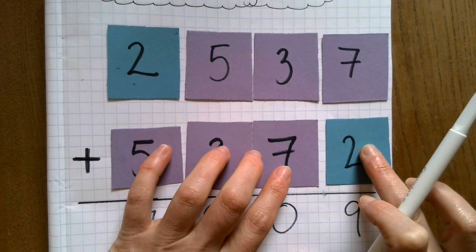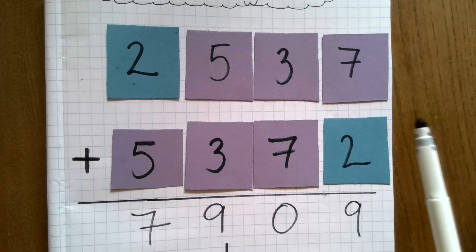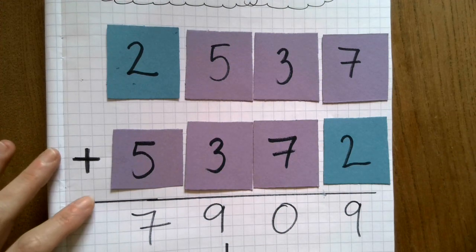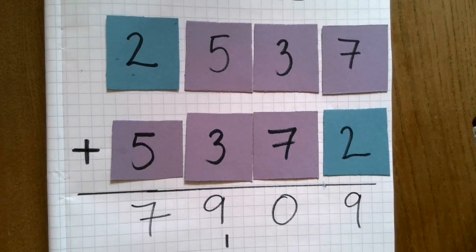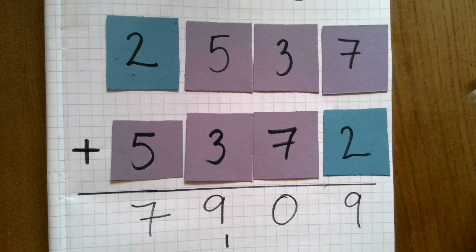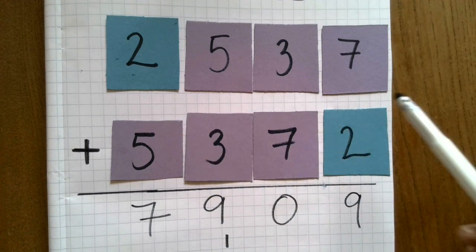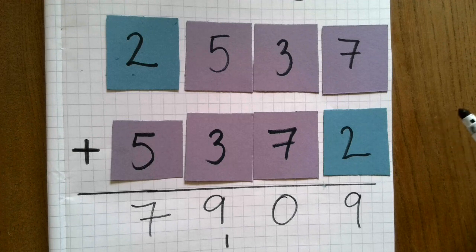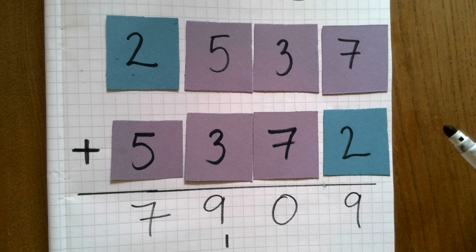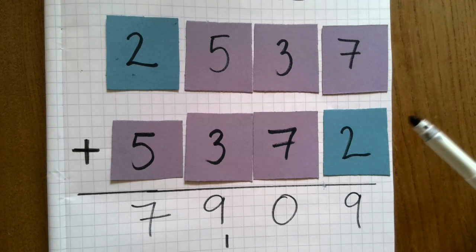You might want to think about what the most simple four-digit number that you could start with is. Any ideas for that? Or you might want to think, okay, I can choose one that could disprove this.